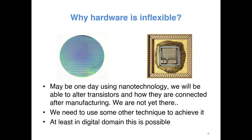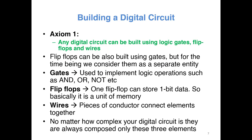So we need to use some alternative technique to achieve this — you should be able to change the circuit inside a chip after manufacturing. At least in the digital domain it is now possible, and in the analog domain also to some extent, because we have new chips called field programmable analog chips where you can change the analog circuit after manufacturing. Now before finding out how it is done using FPGAs, we will accept some pseudo-axioms.